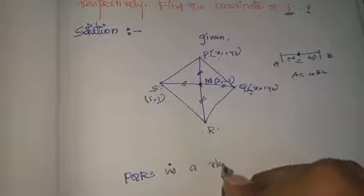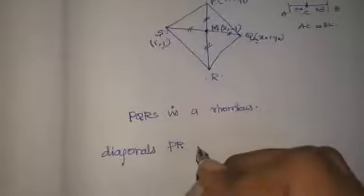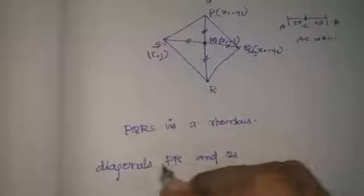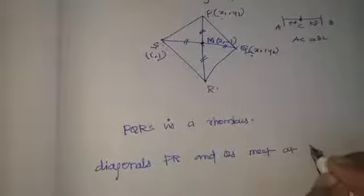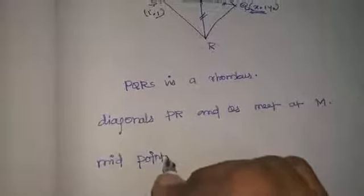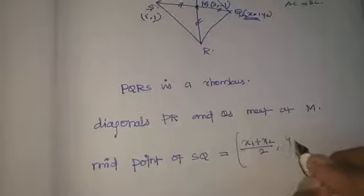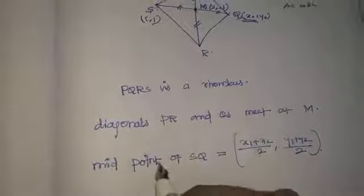PQRS is a rhombus. The diagonals PR and QS meet at M. Now I will find the midpoint of SQ. The midpoint formula is: x1 plus x2 by 2, y1 plus y2 by 2. The midpoint of SQ equals M, which is (2,-1). S point is (1,1) and Q point we assume as (x2, y2).